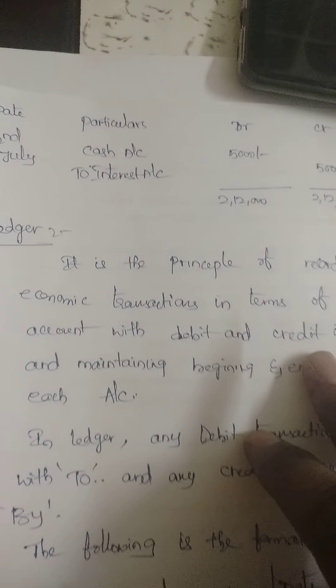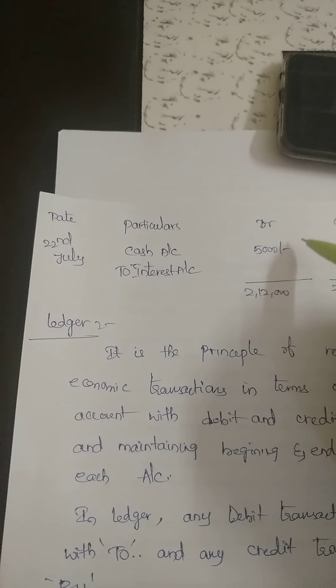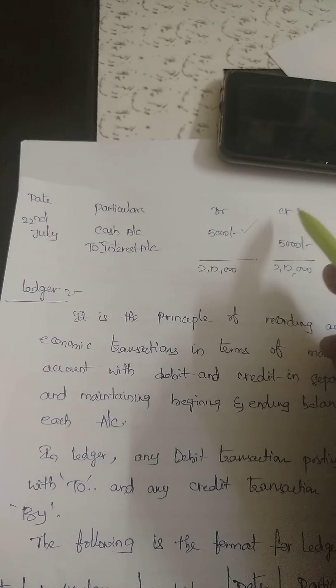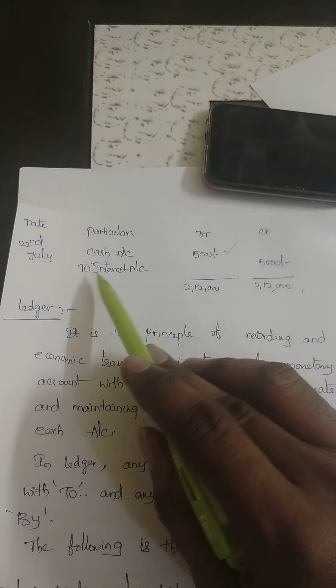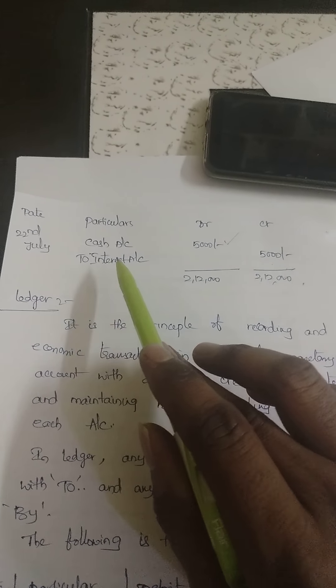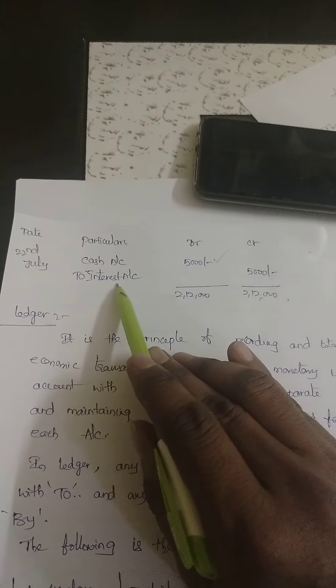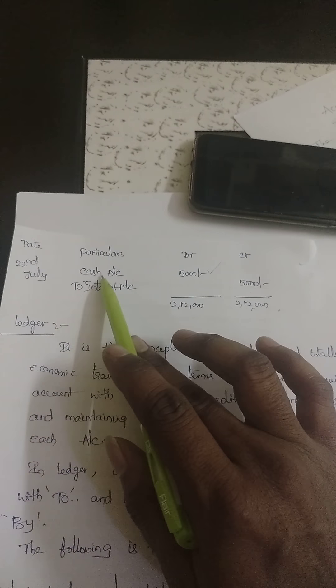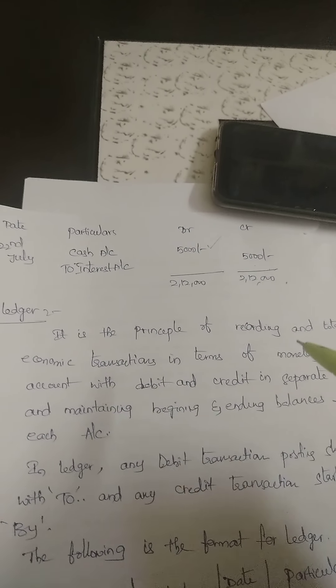Last transaction — interest received, 5,000 rupees. Interest is income for the company. We are receiving cash against interest, so Cash Account 5,000 is debited. Under credit, all profits and gains come — so To Interest Account 5,000 on the credit side. This is the income of the organization, recorded on July 22nd.